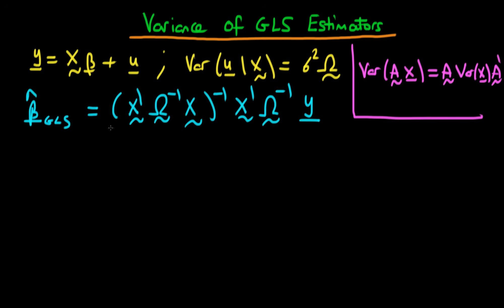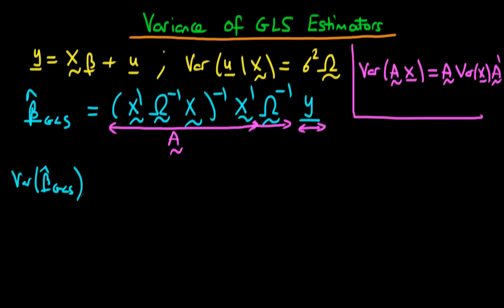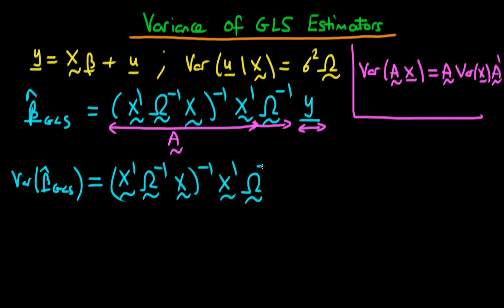What we have here is a product matrix — our A matrix — multiplied by a random vector y, including the Ω⁻¹ term. To derive Var(β̂_GLS), we apply this formula: we take matrix A, which is (X'Ω⁻¹X)⁻¹ X'Ω⁻¹, multiply by the variance of y, and then by the transpose of A.